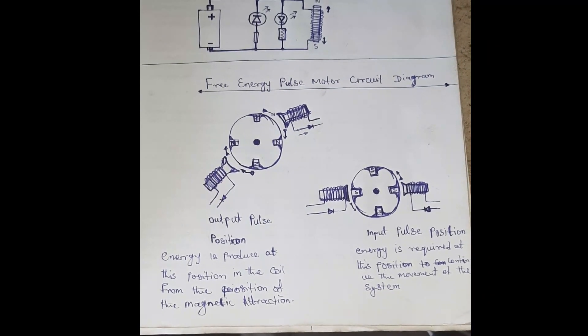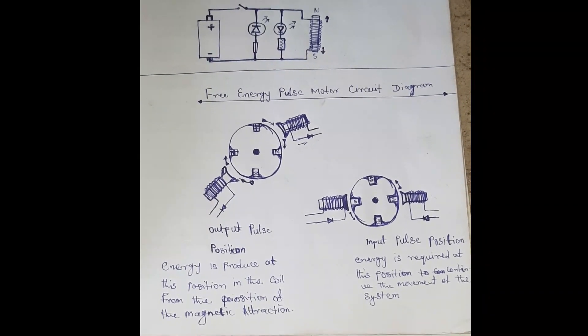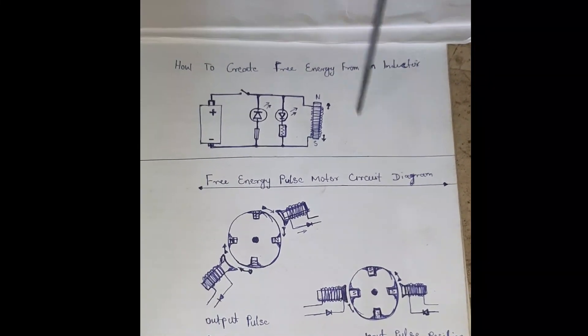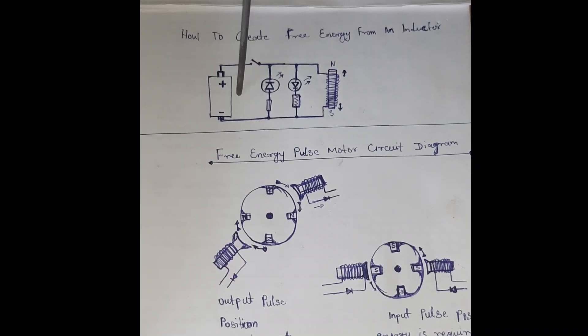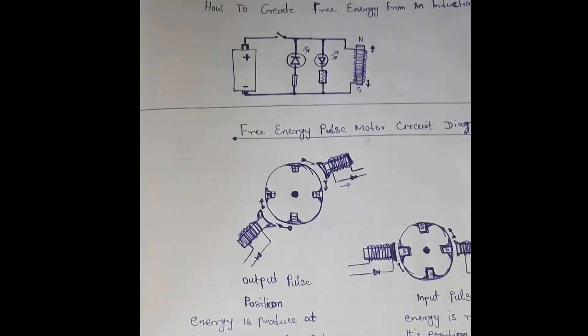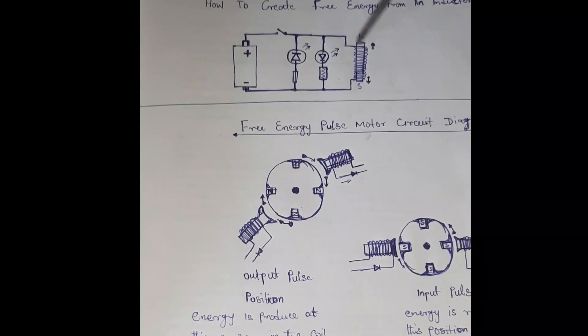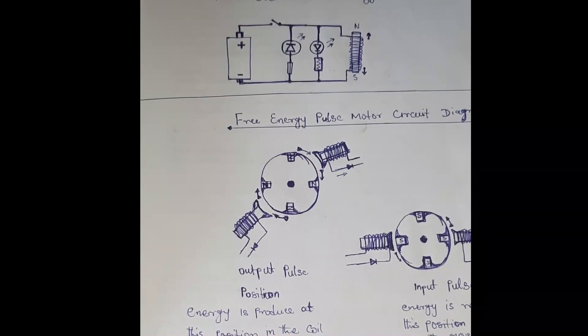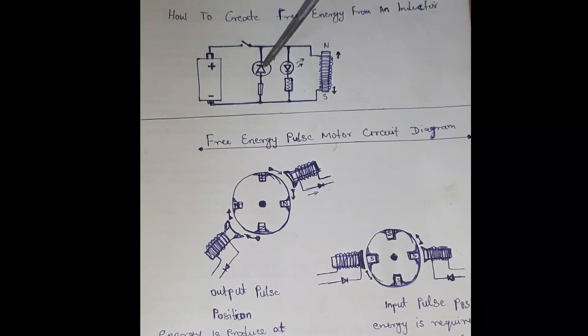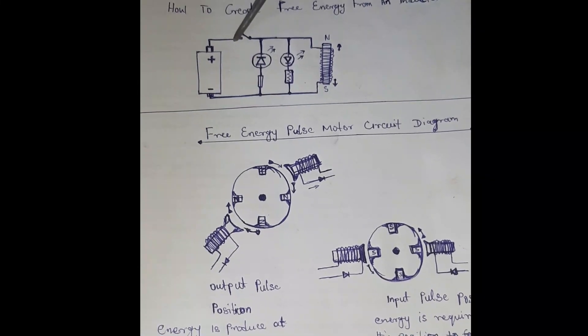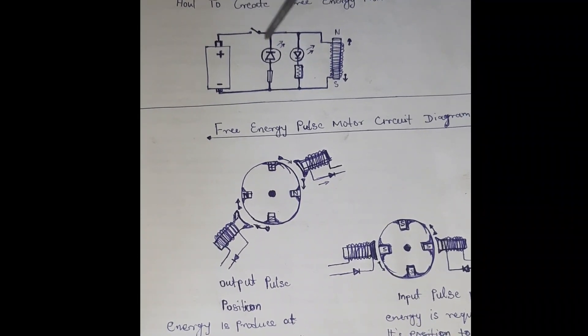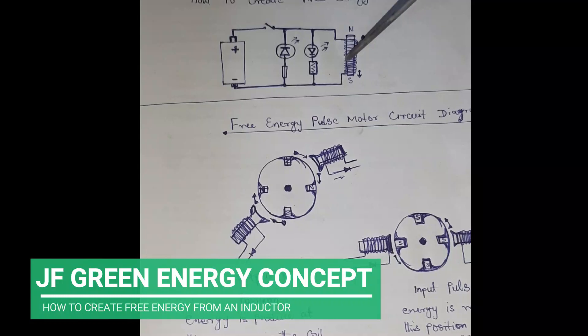Now, how to create free energy from an inductor. From this diagram, this is our battery which is a source of energy. Here we have two LED bulbs that will indicate how energy is being generated and the supply charge. From this diagram you can see that this is the normal connection. When this circuit is closed, this LED bulb will indicate that power has been supplied to this inductor, turning this inductor into a magnet.